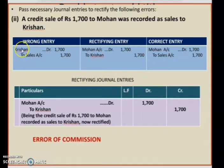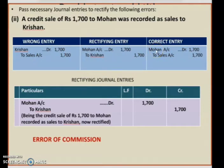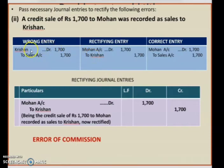The mistake is with the names only. Sales on the credit side is correctly done. Now to rectify: looking at the correct entry, Mohan should be debited with 1700. To cancel Krishna's account which was wrongly debited, you have to credit Krishna with 1700. The wrong effect of this entry gets cancelled — you debited Krishna by mistake, so to cancel that, you credit him. This is how you rectify this transaction. The rectifying entry can be passed as a journal entry. This is also an error of commission.